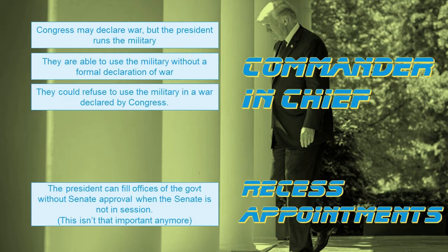Another important check is that the president is commander-in-chief. While Congress has the power to declare war and regulate the army, it's the president who runs the military and makes decisions about how it will be used. Presidents going back to Thomas Jefferson have used the military without an official declaration of war from Congress. Additionally, if Congress were to declare war, the president could simply refuse to deploy the military, limiting Congress's war declaration power.